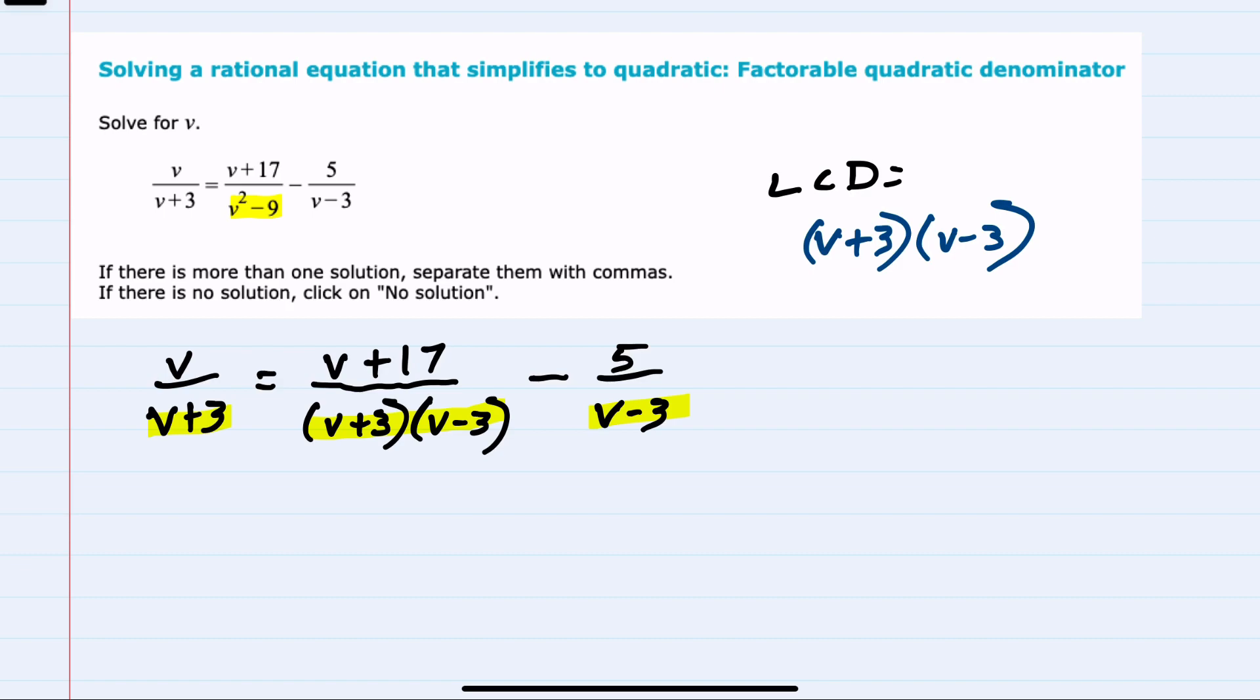With that lowest common denominator, I can multiply every term on the left-hand side and every term on the right-hand side by the lowest common denominator, and that will cancel out all of these denominators for me. So we will multiply here by V plus three, V minus three. We want to multiply this one by V plus three, V minus three, and this term by V plus three, V minus three.